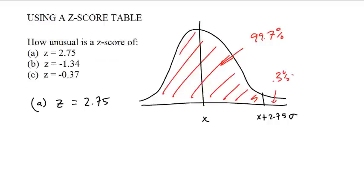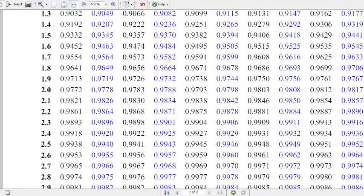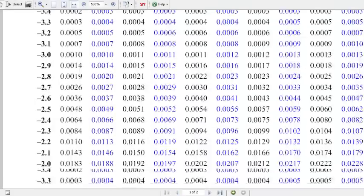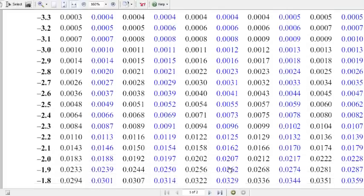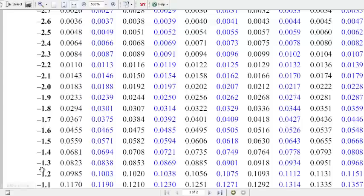What about a z-score of negative 1.34? Well, if your z-score is negative 1.34, let's go back to the table. Now we're up in the negatives. And here's the problem. The last digit of 4 is here now in the same column. Negative 1.34 is right here. 0.0901. So that's 9.01%.